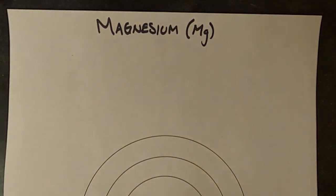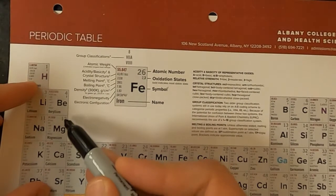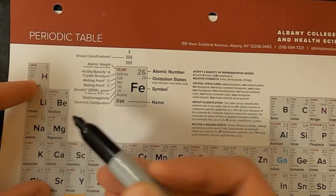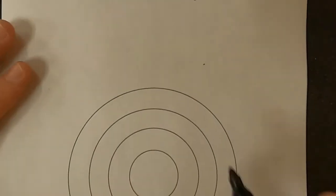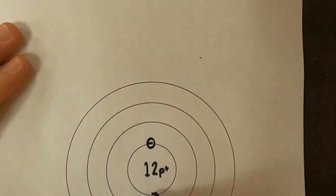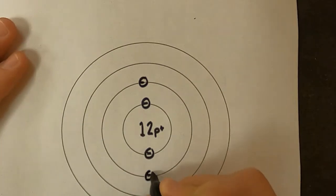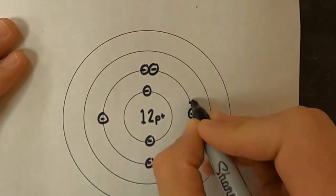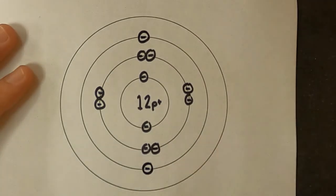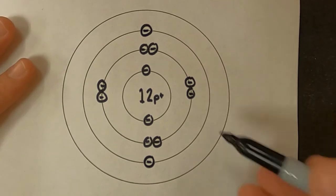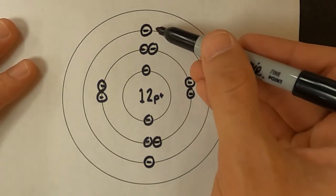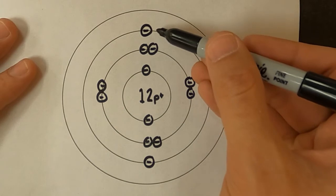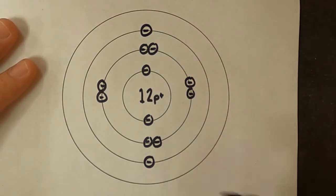Next is magnesium. Based on its location on the periodic table, its atomic number is 12, and so it has to have 12 protons and 12 electrons. It has its first ring full, its second ring full, and its third energy level or ring with two electrons.